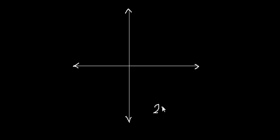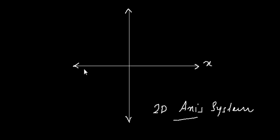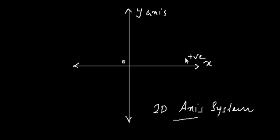Now if you have two number lines running perpendicular to each other, that makes a two-dimensional axis system. For convenience, let's call them the x-axis and the y-axis. Again, each originates from 0 and extends to positive and negative infinity. So you have positive and negative values along both axes, and you need two values — the x value and the y value — to define a point in the axis system.